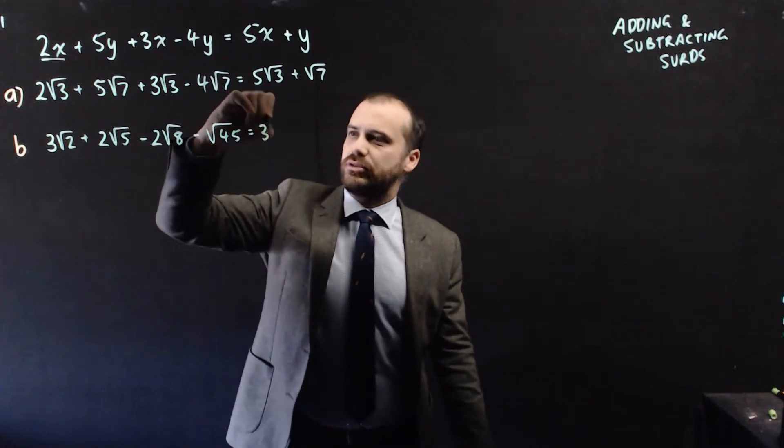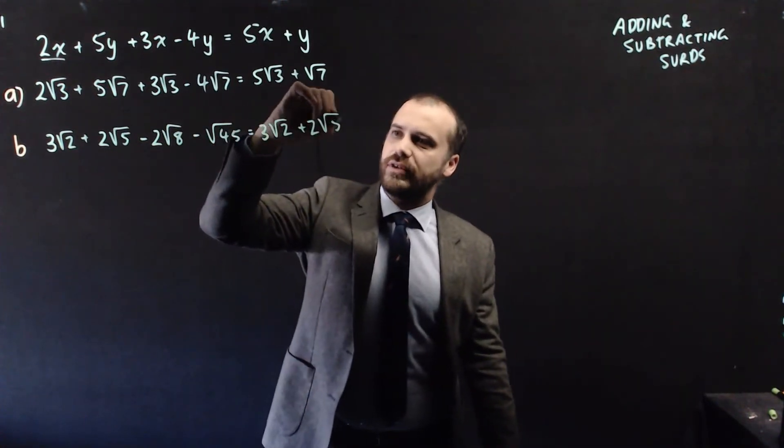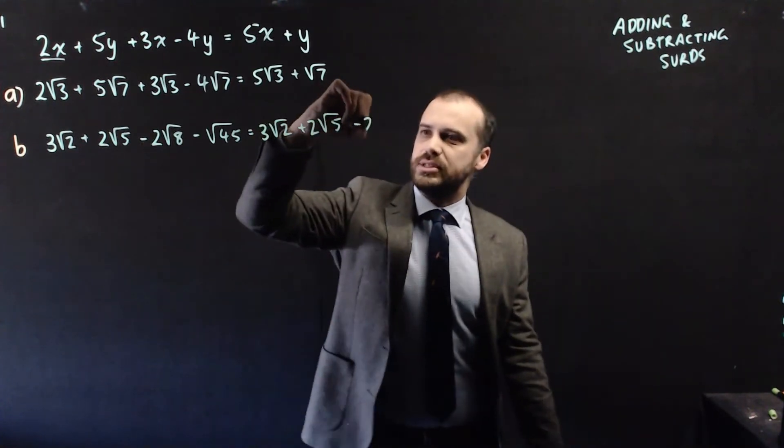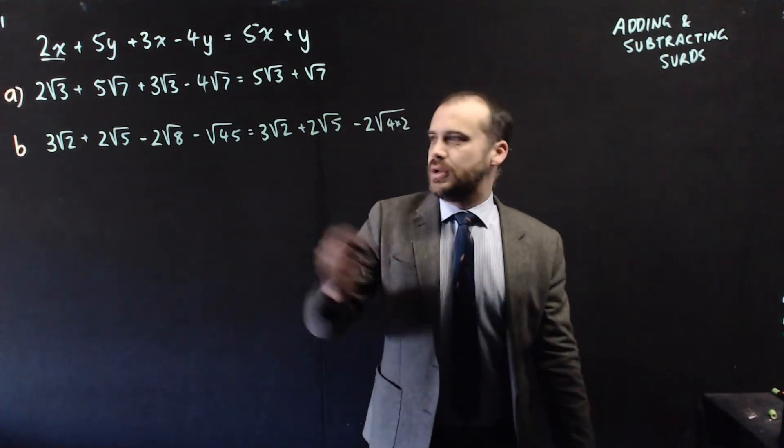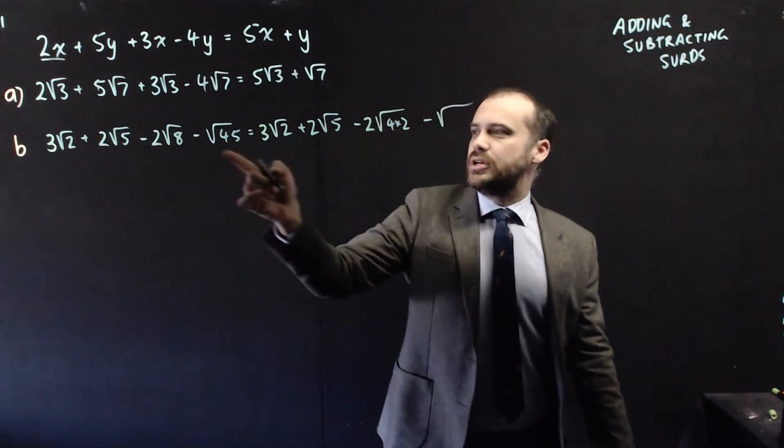So 3 root 2 is still 3 root 2. Nothing special there. 2 root 5 is just 2 root 5. I can't simplify that. Now, negative 2 root 8 is the same as negative 2 root 4 times 2. And negative root 45 is the same as negative root 9 times 5.